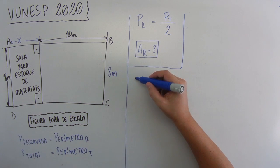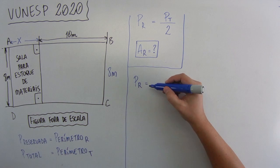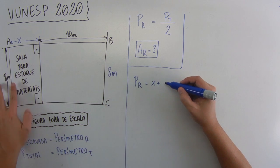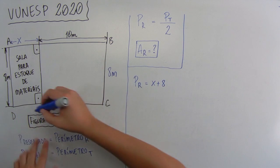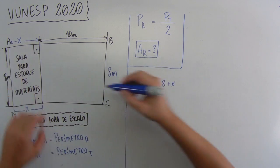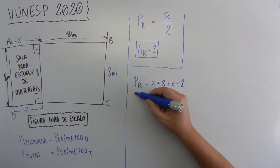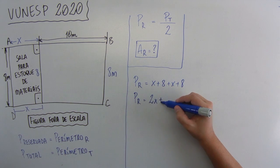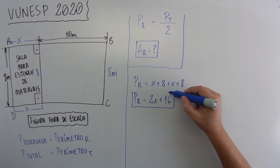Então, vamos ver o perímetro da área reservada. O perímetro da área reservada é o contorno dela aqui, então, é X mais 8, mais X, que aqui também vale X, mais 8, que é esse pedaço aqui. Então, vai ficar o perímetro da área reservada é igual a X mais X, 2X, mais 8 mais 8, 16. Então, o perímetro dela é esse daqui.